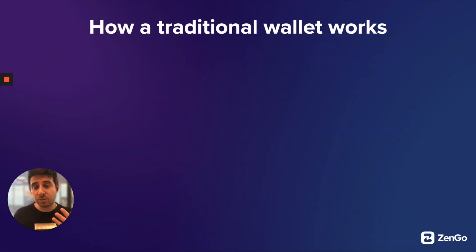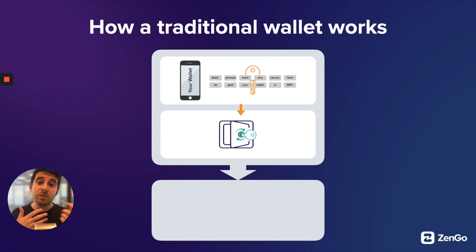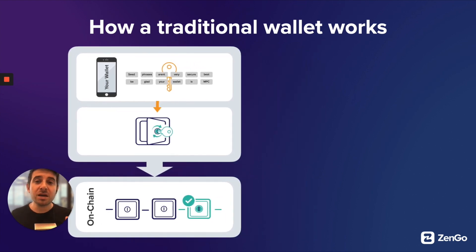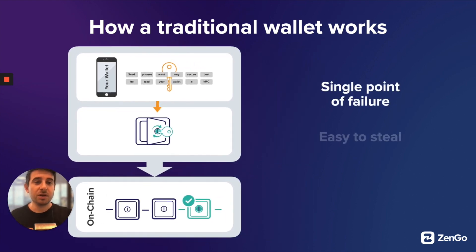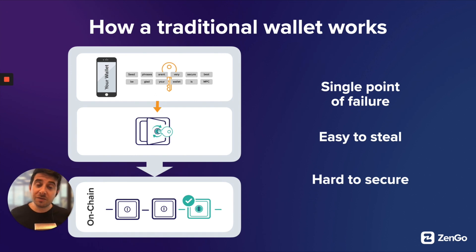Let's look at how a traditional wallet with a seed phrase works, and then compare that to MPC and Zengo's approach. With a traditional wallet — and this is a simplified version — you have your wallet with the seed phrase attached, which is used to confirm something on the blockchain. By signing with your seed phrase and private key, it sends a message to the blockchain, which accepts it and moves on. But because it's a single point of failure, it's really easy to steal. Whoever has the seed phrase can take your assets. And if you lose it yourself, you might not be able to recover.